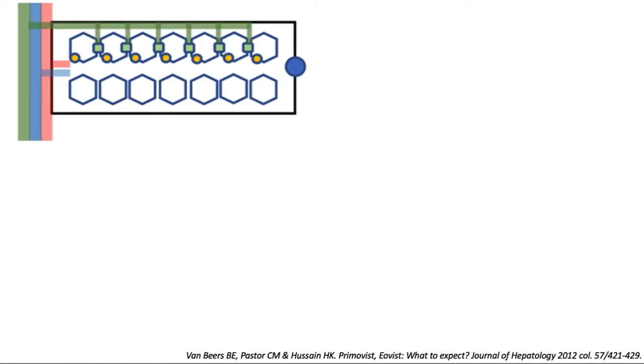So again, this is the portal triad with small branches delving into the hepatic sinusoids here, while the bile canaliculi drain into the bile ducts.